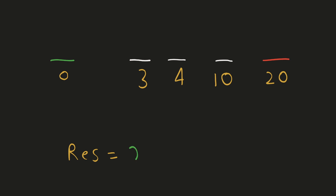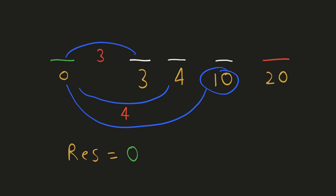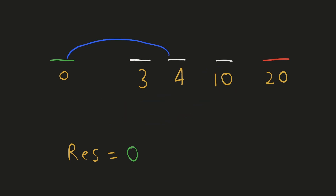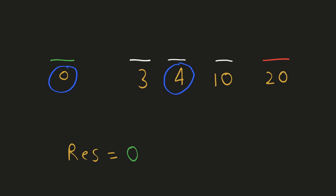Let's initialize our result to 0 and maximize it as we make jumps. When we consider the first group of stones 0, 3, and 4, to minimize our jump distance, let's say we jump from 0 to 3 on the forward journey and from 4 to 0 on the return — this is better than jumping directly from 10 to 0. Alternatively, if we jump from 0 to 4 forward and 3 to 0 on return, we still have to jump a distance of 4. So either way, we have to make a jump of length 4. Since this is the maximum distance seen so far, we update our answer.